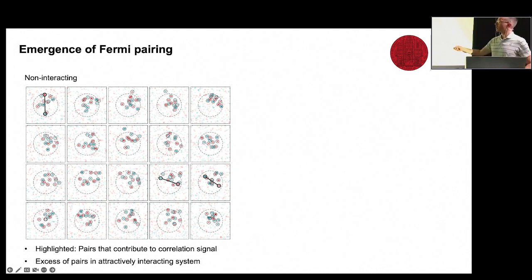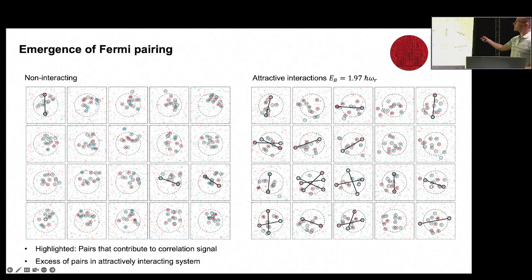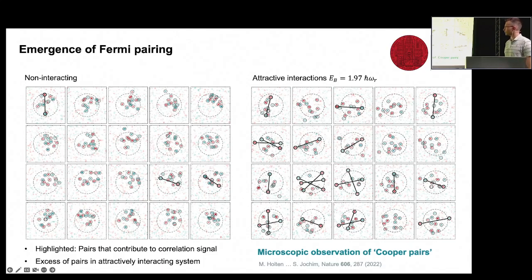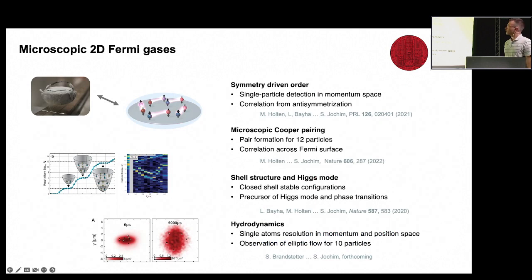The nice thing is we can go back to the original snapshots and actually look for the pairs that contribute to this correlation signal. We're taking many images and just highlighting those pairs that would contribute to this correlation peak that I just showed you. Sometimes you find such pairs even in the non-interacting system - this just happens by chance because the two spin components are uncorrelated. However, if we go to attractive interactions, we do find many more of these pairs. It's quite obvious if you highlight these pairs that you do see in the raw data these mini-Cooper pairs. We thought it quite nice that we now microscopically can see the birth of these Cooper pairs, and indeed we see a lot of the physics from the many-body system carries over into this microscopic limit.